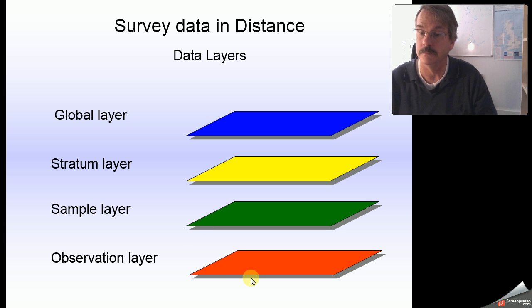Inside each of your strata, you may have line transects or point transects, and there's information associated with how long are those transects, what were the weather conditions on that particular transect that might be recorded in this hierarchy in the sample layer. And finally, the observation layer, where your actual sightings and information about those sightings are recorded.